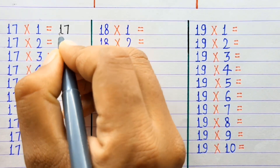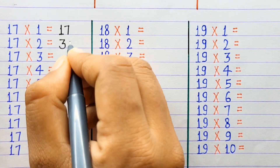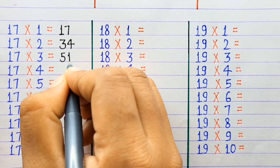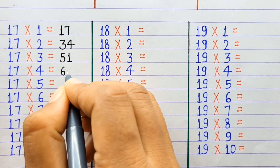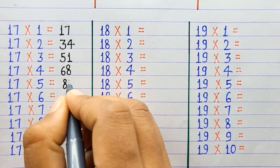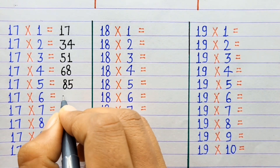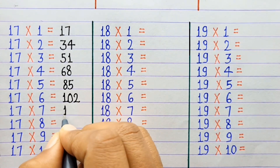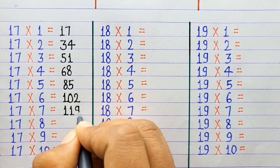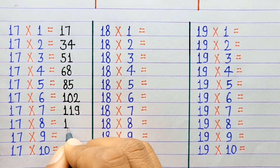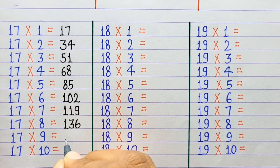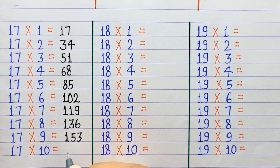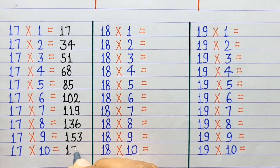17×1=17, 17×2=34, 17×3=51, 17×4=68, 17×5=85, 17×6=102, 17×7=119, 17×8=136, 17×9=153, 17×10=170.